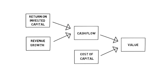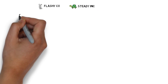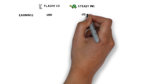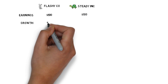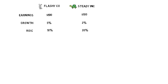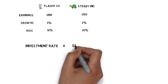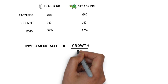Let's now take a look at two very different companies: FlashyCo and SteadyInc. Both companies are generating earnings of $100 in their first year. FlashyCo is high growth, but it generates a relatively low return on capital. In contrast, SteadyInc has quite modest growth but a higher return on capital. Using revenue growth and return on invested capital, we can work out what's called the investment rate — simply the proportion of earnings that need to be reinvested back into the business in order to fund the future growth of that business — and it's calculated using this simple formula.